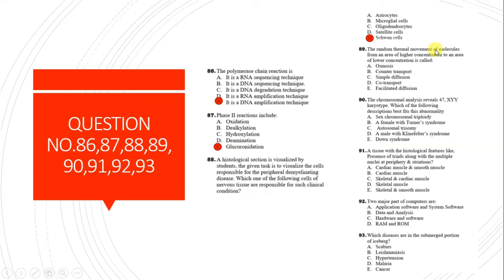Question 89: Random thermal movement of molecules from an area of higher concentration to an area of lower concentration is called simple diffusion.